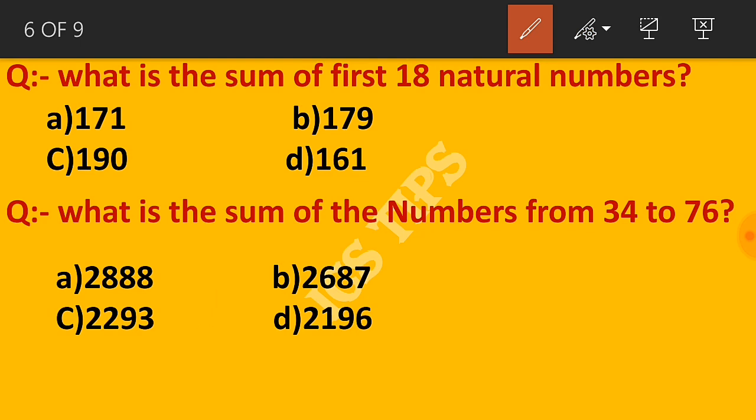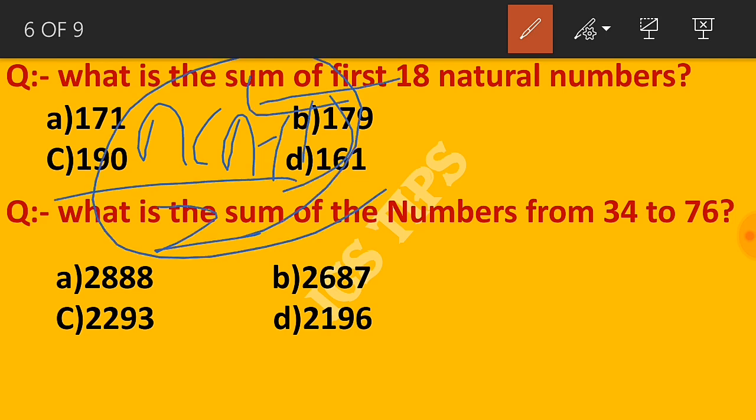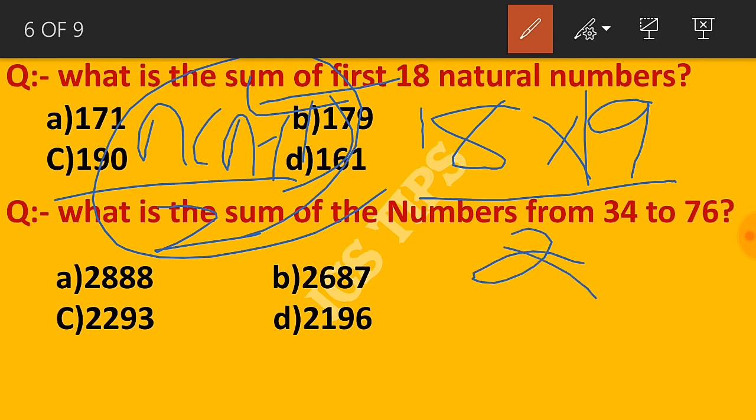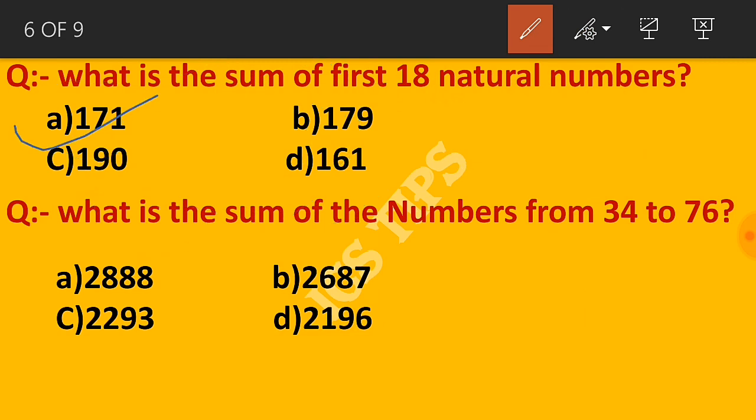Question: What is the sum of first 18 natural numbers? Use the formula n into (n+1) by 2, where n is 18.